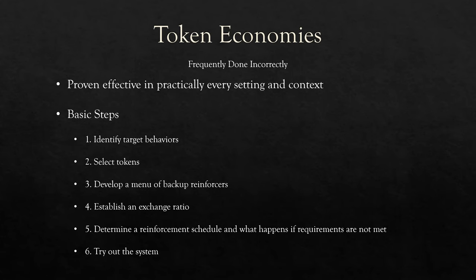There are basic steps we need to follow. Number one: identify target behaviors. Two: select tokens. Three: develop a menu of backup reinforcers. Four: establish an exchange ratio. Five: determine the reinforcement schedule for earning tokens. And six: try out the system. These are our basic steps — let's go through each one.